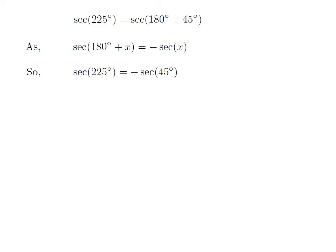Let us apply the above identity for secant of 225 degrees. Here x is 45 degrees, so secant of 225 degrees equals minus secant of 45 degrees.